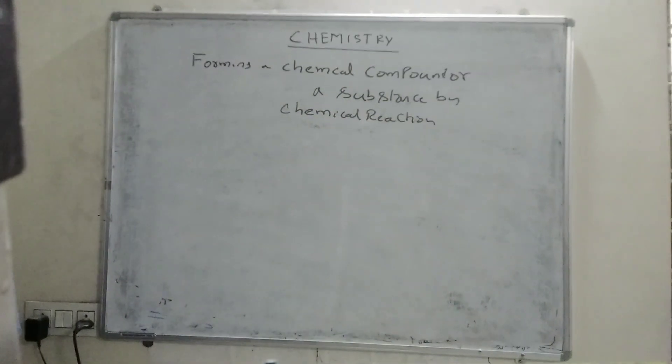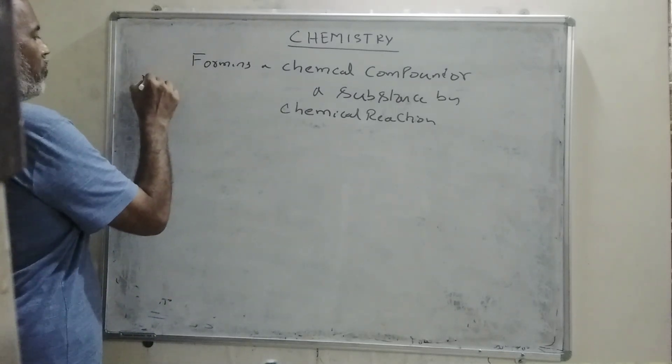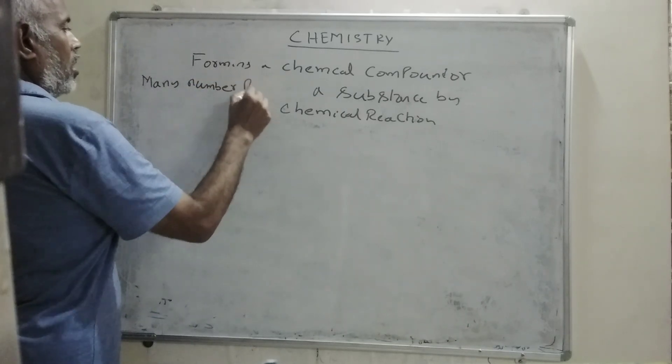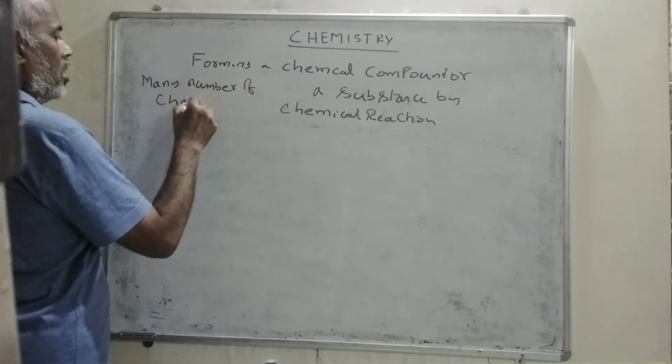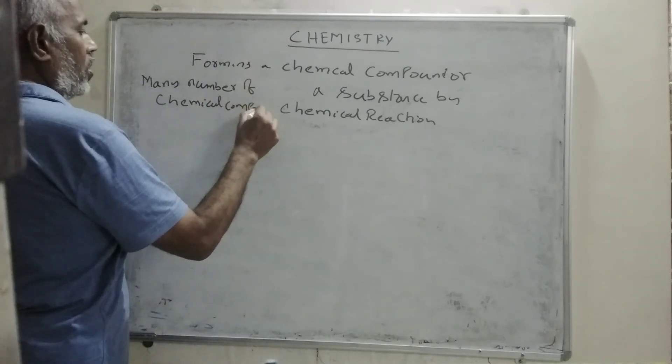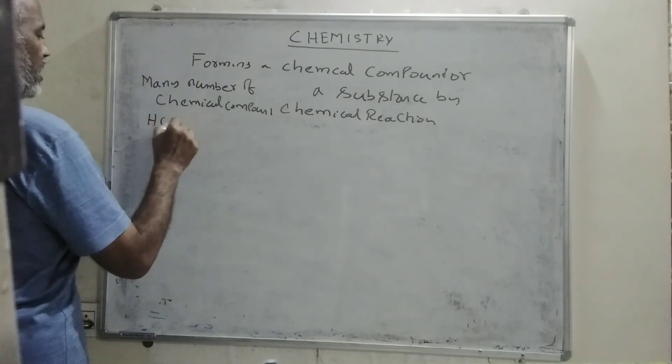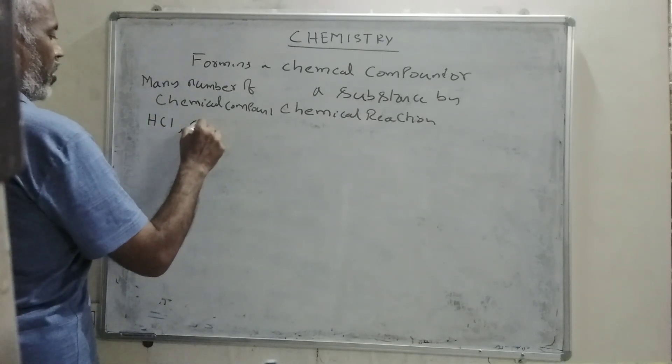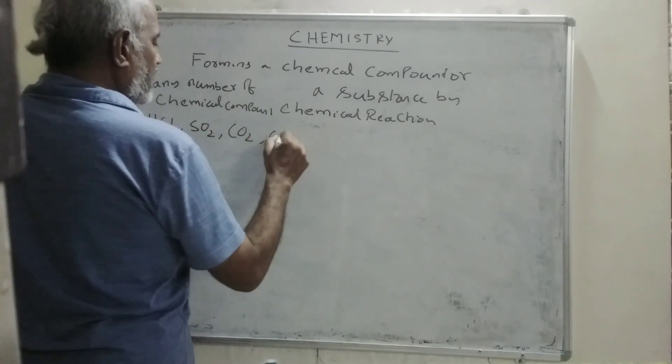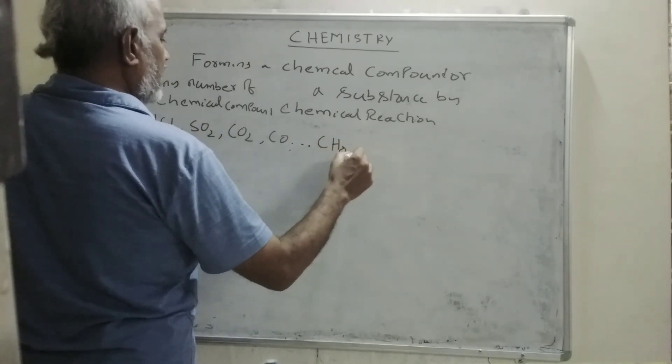We have so many chemical compounds, many number of chemical compounds. Some chemical compounds are hydrochloric acid, sulfur dioxide, carbon dioxide, carbon monoxide, CH4 methane, and things like this.